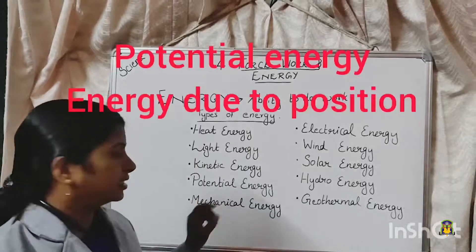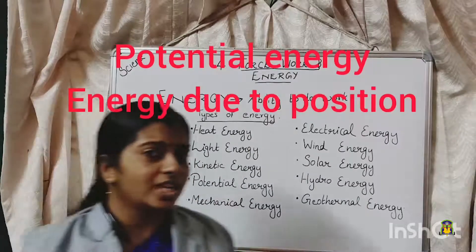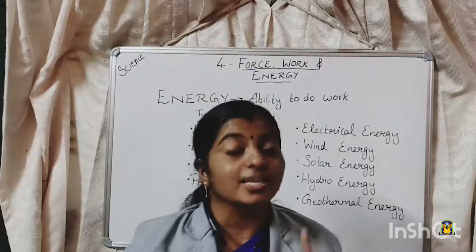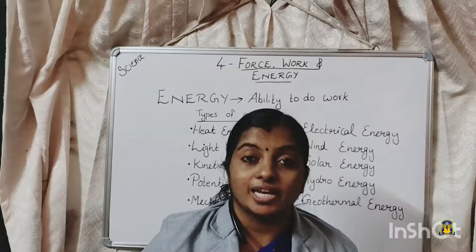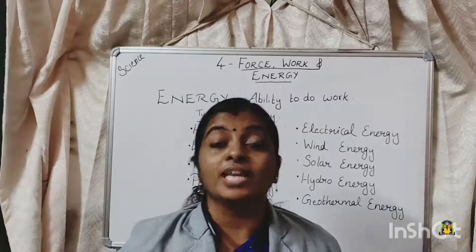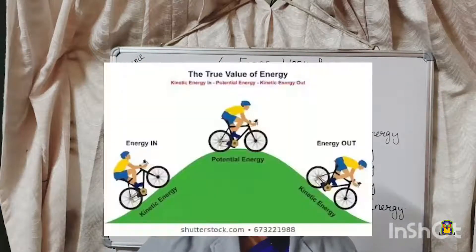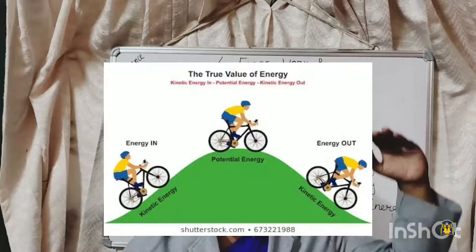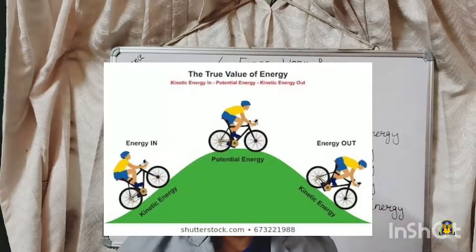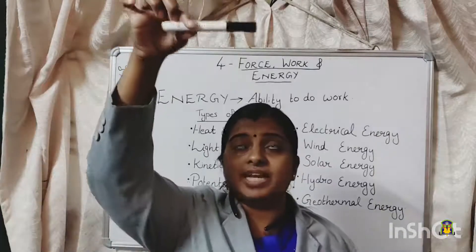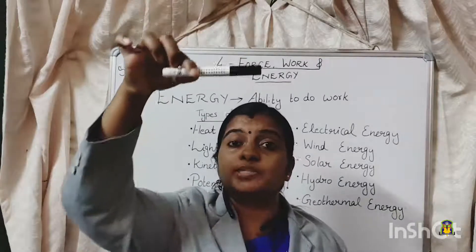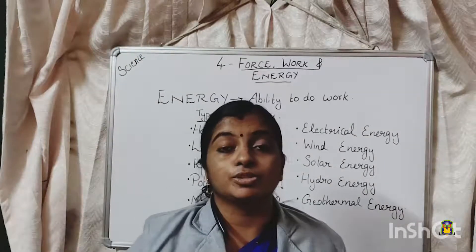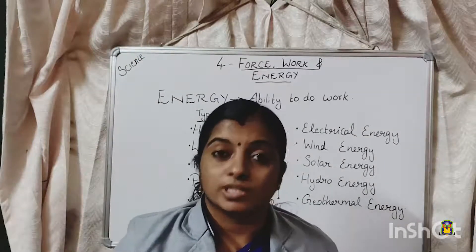Then, potential energy. This also I told you in the previous class. Potential energy is the energy possessed by a body due to its position. A stone that is kept at a particular height — if I hold this object like this, it possesses potential energy. That is, the energy possessed due to its position.